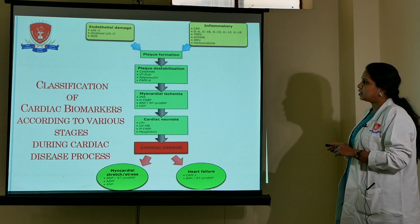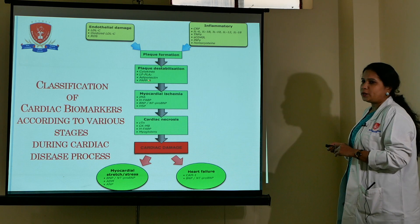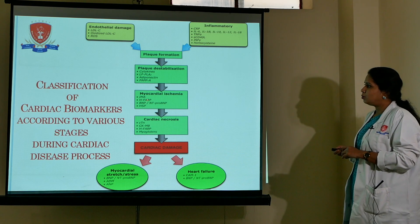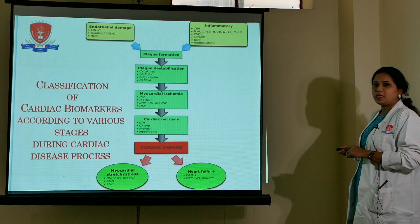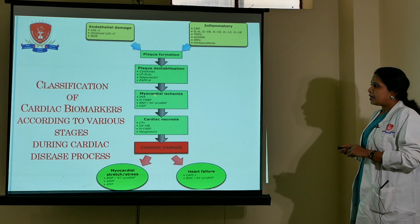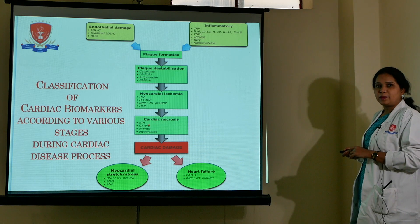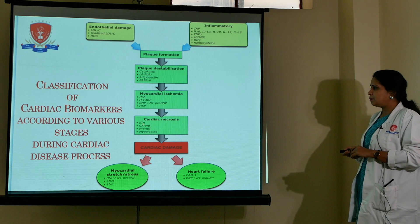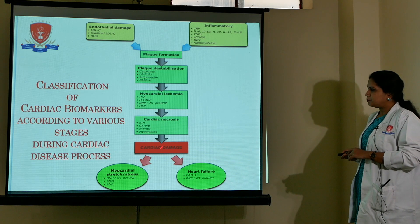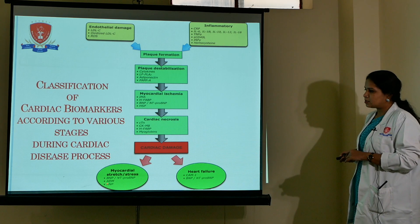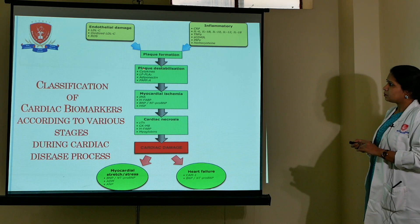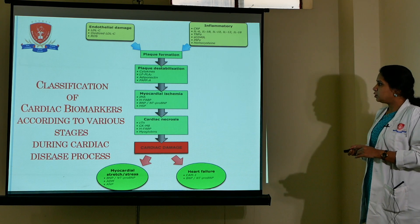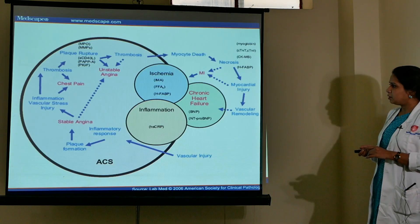At the plaque destabilization stage, markers include cytokines, lipoproteins, adiponectins, and PAP. For myocardial ischemia there are IMA (ischemia-modified albumin), FABP, BNP, NT-proBNP, and HSP. As a result of myocardial ischemia, cardiac tissue damage — cardiac necrosis — occurs, with markers like troponin, CKMB, FABP, and myoglobin covering ultimate cardiac damage, myocardial stress, and heart failure. At each stage, specific markers are available based on the patient's condition.